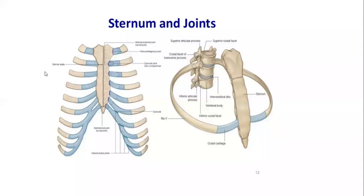Moving on to the manubriosternal joint — the joint between the manubrium and the body of the sternum. It is an anterior midline joint. The junction produces a palpable bulge, which is given the name of the angle of Louis or the sternal angle. This joint belongs to the secondary cartilaginous variety, meaning it is again a symphysial joint.